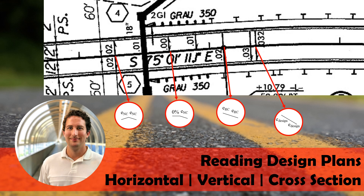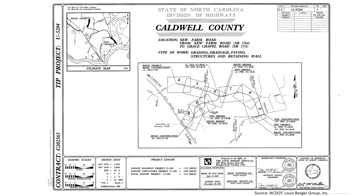In this video we're going to review some highway design plans. We'll look at both horizontal, vertical, and the cross-section components. This is a set of design plans from Caldwell County, North Carolina, and we'll take a look at one sheet for horizontal, one for vertical, and then look at the cross-section element. We just need to keep in mind that there is a larger set of design plans — we're going to focus on a couple of these sheets.